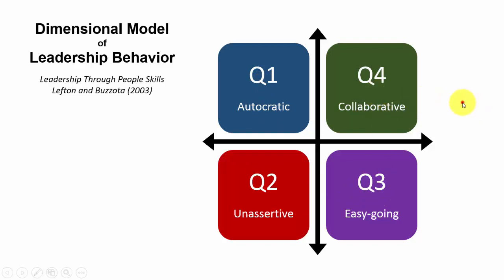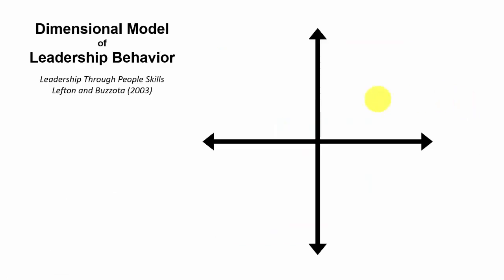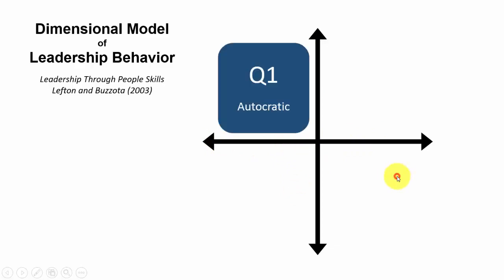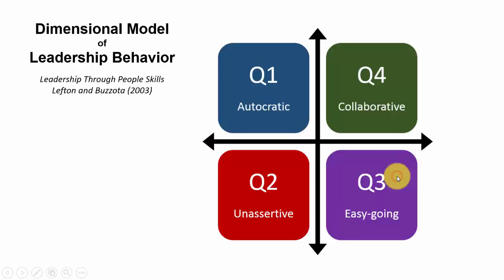What I like to do is build complex slides gradually. So I would animate this, but you're going to see a problem when I do. You can see that both dimensions come up at the same time — I would like to talk about each dimension separately and add some labels. Also, you can see that when animating it, it's out of order: it went Q1, Q4, Q2, Q3.